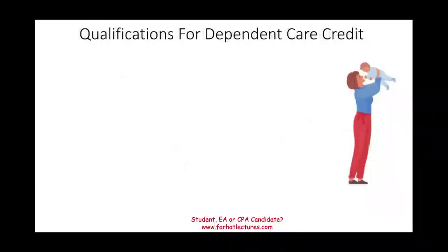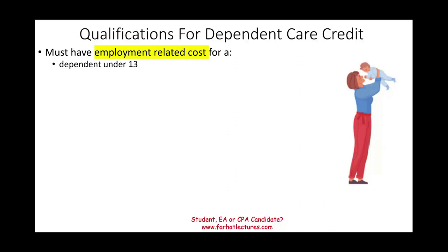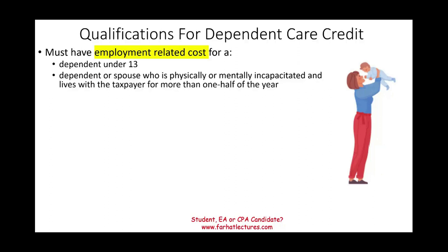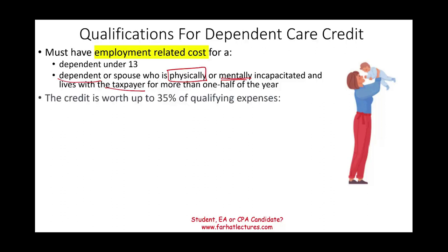Let's take a look at the qualifications for the Dependent Care Credit. You must have employment-related costs — in other words, you are working. The dependent must be under the age of 13, or a dependent or spouse who is physically or mentally incapacitated and lives with the taxpayer for more than half of the year. Simply put, they cannot take care of themselves. The credit is worth up to 35% of qualifying expenses, and that percentage can range from 25% up to 35% based on adjusted gross income.